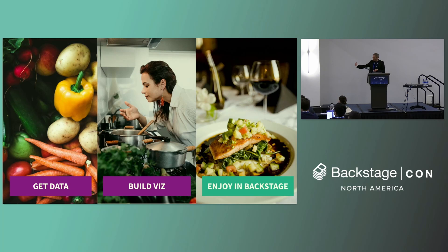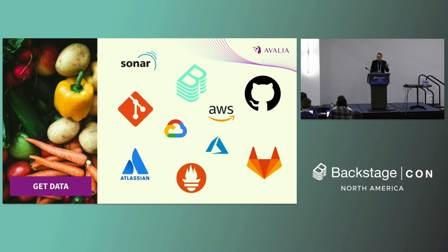In the rest of the session I'm going to go through three steps, building an end-to-end demo: get data from a development team, build the data visualization using a tool called Vega, and finally bring this visualization into Backstage with a plugin. The data comes from everywhere — all the tools we use to develop and operate software — and from Backstage itself, such as tech insights and Backstage analytics.